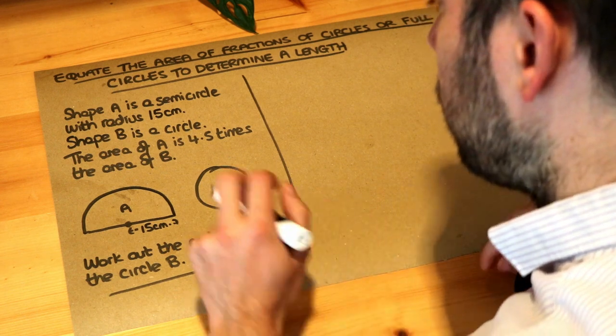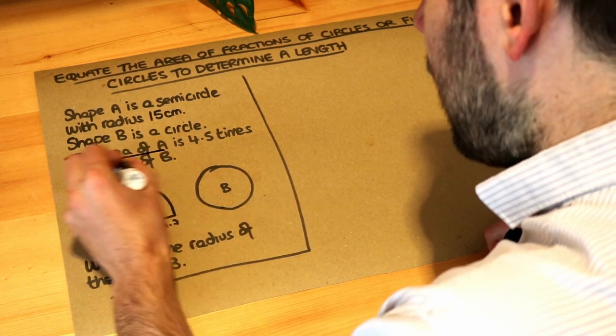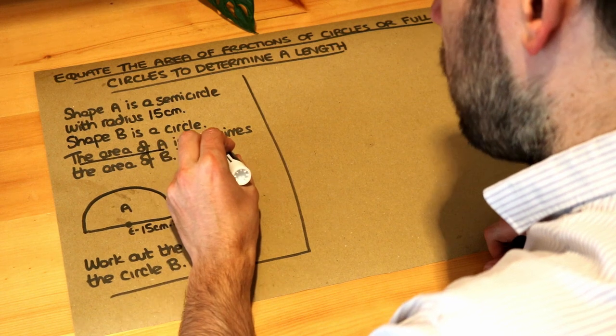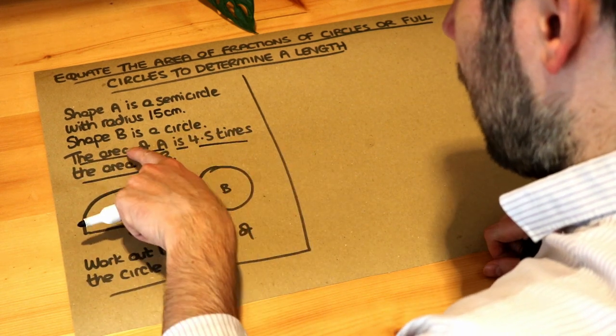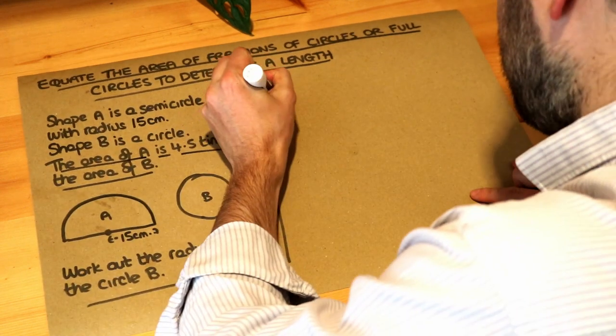Now we're told that the area of A is equal to 4.5 times the area of B. So let's find the area of A first. So area of A.